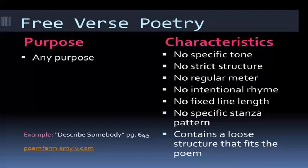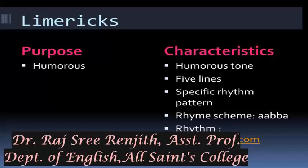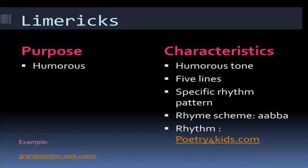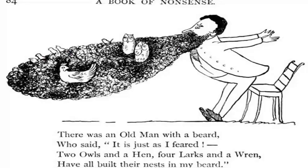Another interesting form is the limerick — a humorous poem with five lines and a specific rhythm and rhyme scheme. For example, from A Book of Nonsense: 'There was an old man with a beard who said, it was just as I feared — two owls and a hen, four larks and a wren have all built their nest in my beard.' That is an example of a limerick.